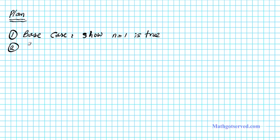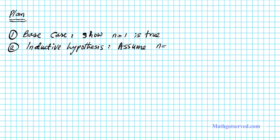Number two: we have the inductive hypothesis. The inductive hypothesis is the second part of our proof. For the inductive hypothesis, we're going to make an assumption — we're going to assume that n equals k is true for some k in the set of natural numbers.